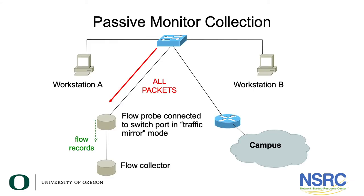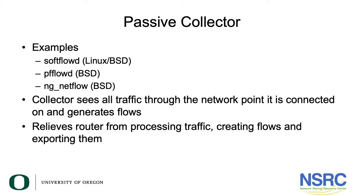The alternative is passive monitor collection. We can set up a mirror or SPAN port on an Ethernet switch, connect a flow probe to the switch port, and that will mirror traffic over to the flow collector. This allows us to monitor traffic flow between workstations or between workstations and the rest of the campus. Commonly used examples of software for this passive flow collector include softflowd, which runs on Linux and BSD, PF flowd, and ng netflow. The collector sees all traffic through the network point it is connected on and generates flows from that, relieving the router from processing and exporting them.